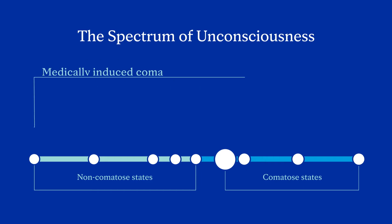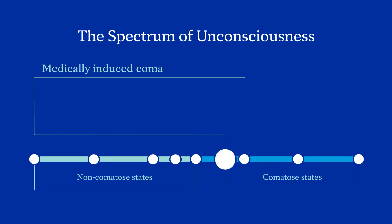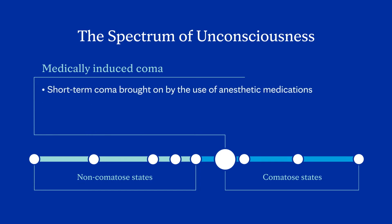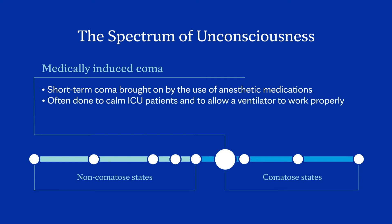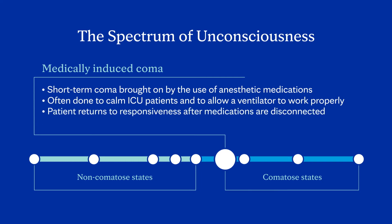The first kind of comatose state we are covering is a medically induced coma. This is a short-term coma brought on by the use of anesthetic medications. This is often done to calm ICU patients and to allow a ventilator to work properly. Once medications are disconnected from the patient, they will return to responsiveness.